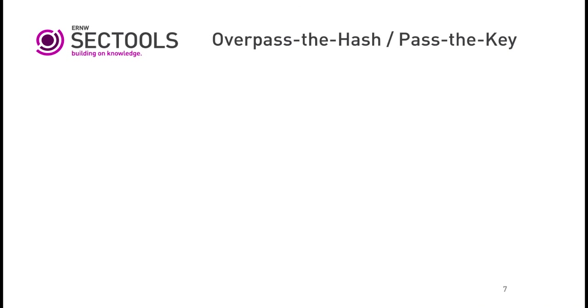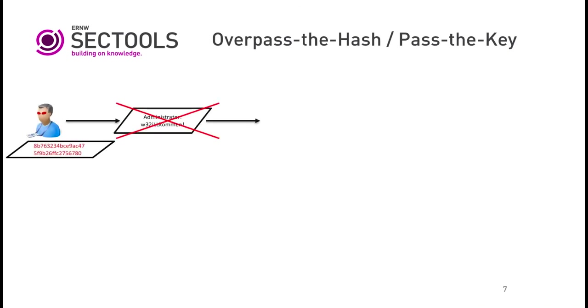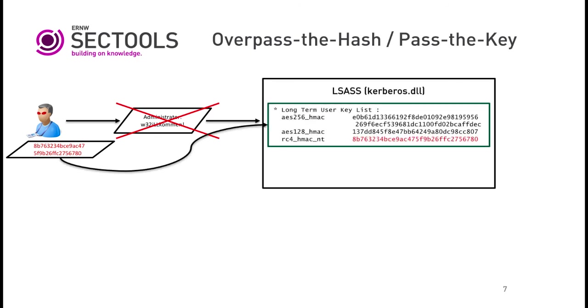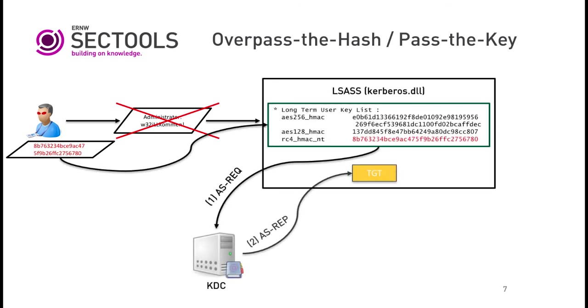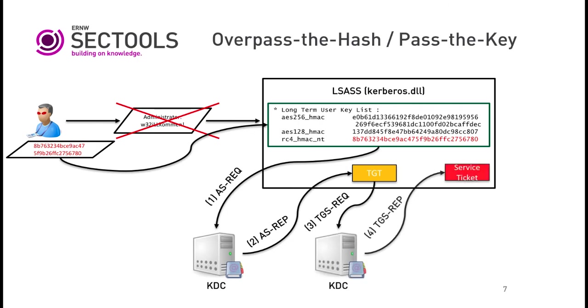Pass the key: the attacker injects the user key directly into the LSASS process and doesn't need the actual password. He obtains the TGT and the service ticket, and now has access to the resources.